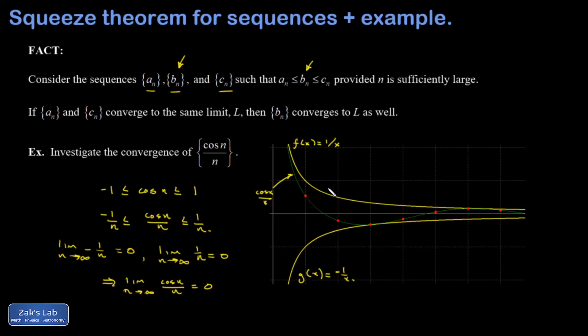If I evaluate this only at integer values, that's what the red dots are, and those represent the actual numbers in this sequence.